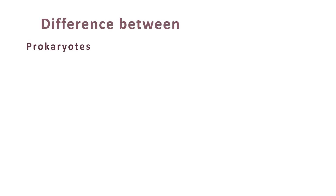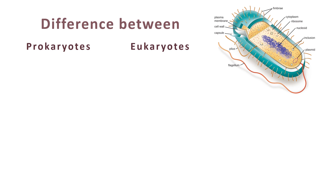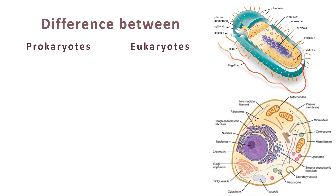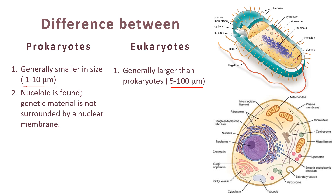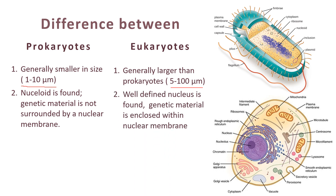Let us understand the differences between prokaryotes and eukaryotes. This is a bacterium representing a prokaryote and this is a eukaryotic cell. The first difference is that prokaryotes are generally smaller in size — just 1 to 10 micrometers. Eukaryotes are larger, with a size range of 5 to 100 micrometers. Nucleoid is found in prokaryotes and genetic material is not surrounded by a nuclear membrane. Whereas in eukaryotes, there is a well-defined nucleus and genetic material always remains enclosed within the nuclear membrane. In prokaryotes, a single chromosome is found. In eukaryotic cells, more than one chromosome is usually present.